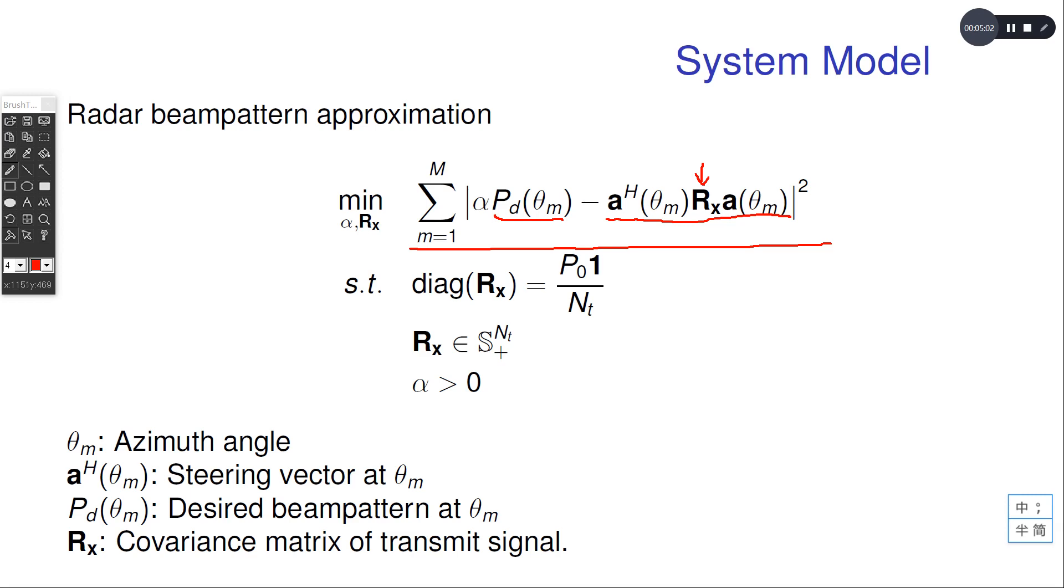We want to make them as similar as possible via a least square function. The first constraint is very common in radar applications. It limits the average transmit power at each antenna to be the same.